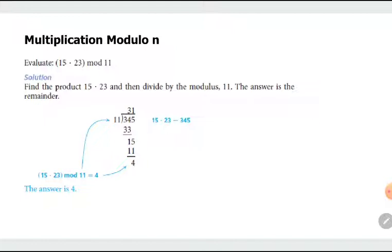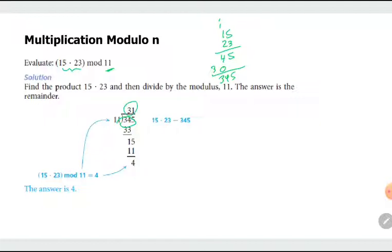How about multiplication? In multiplication, the same process applies: multiply the values inside the parentheses and divide that product by the modulus. So 15 times 23 equals 345. Dividing 345 by 11 gives a quotient of 31 and a remainder of 4. So 15 times 23 modulo 11 is equivalent to 4.